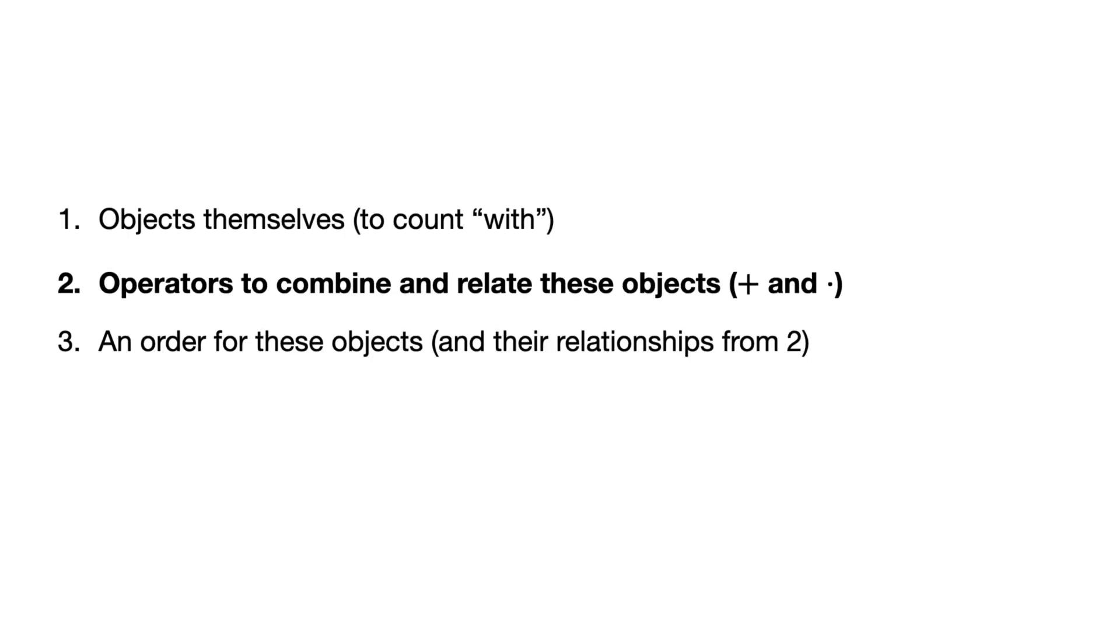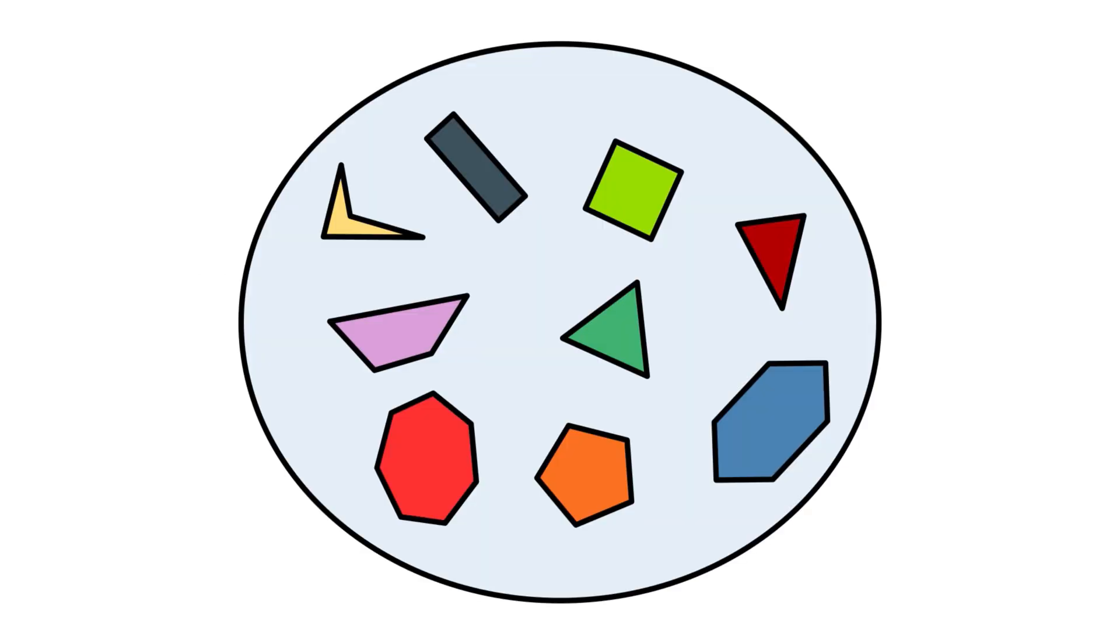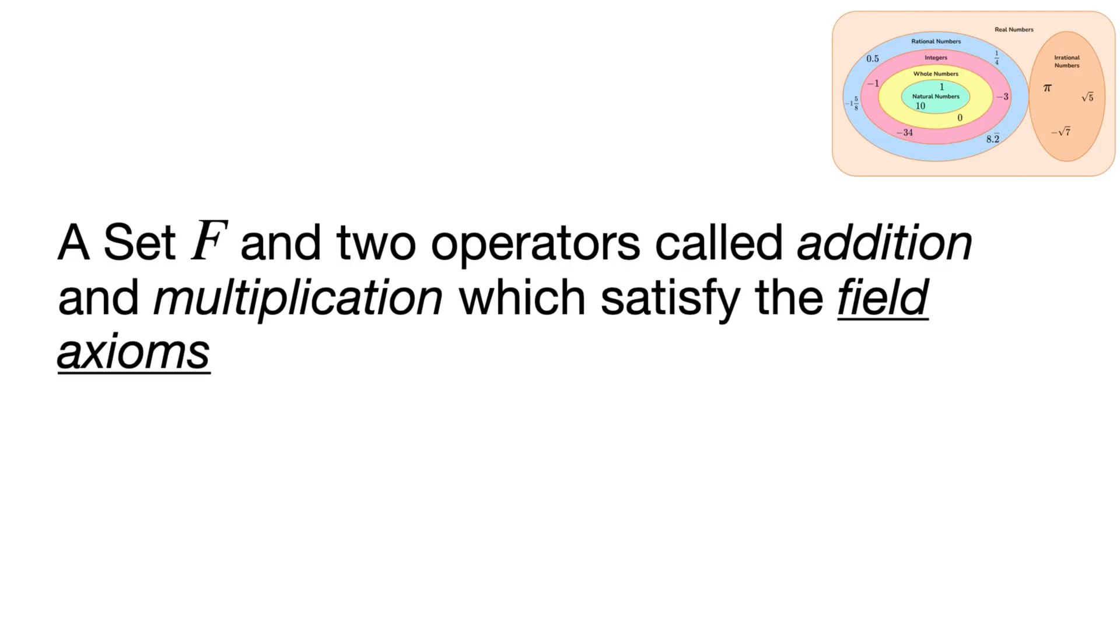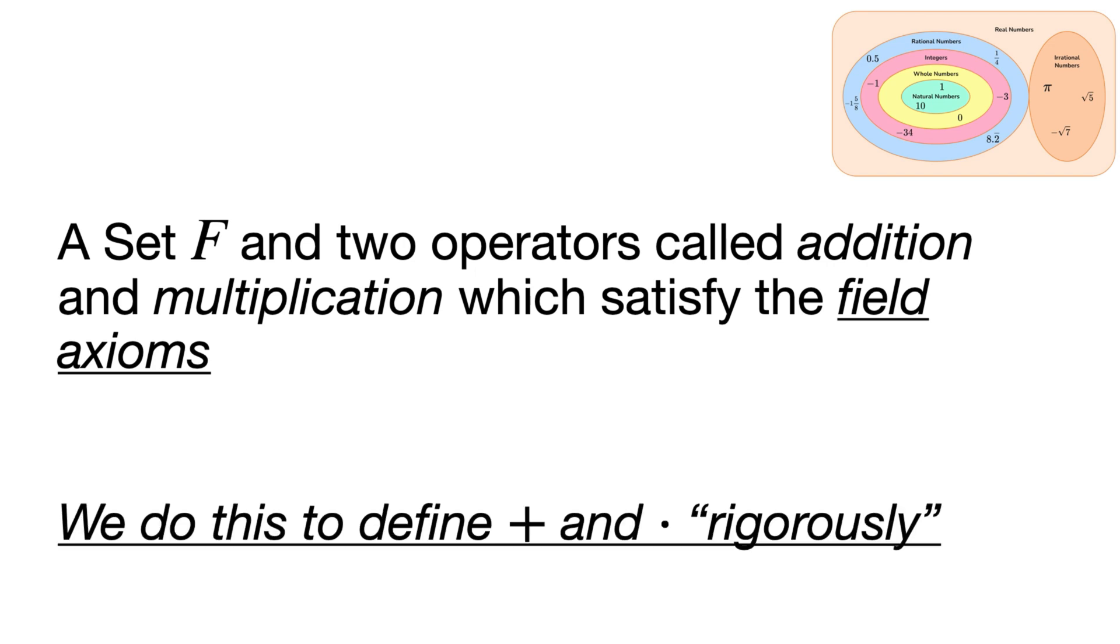Now let's move on to the actual operators that we need to combine and relate these objects because currently all we have are sets or unordered collections of things. So we need some additional stuff to make these things numbers and allow us to do things like add and subtract. And this brings us to the idea of fields. Now, a field is a set of elements that contains two operators called addition and multiplication, which satisfy the field axioms. There are 11 field axioms, five for addition, five for multiplication, and then one for distribution across both multiplication and addition. And we do this so we can define addition and multiplication rigorously and axiomatically.